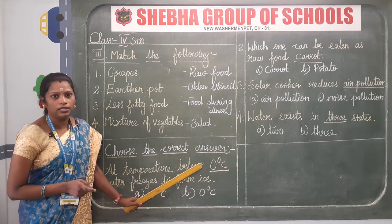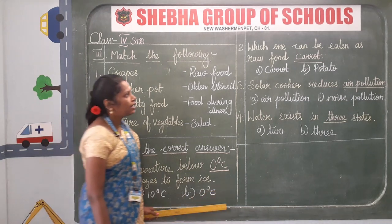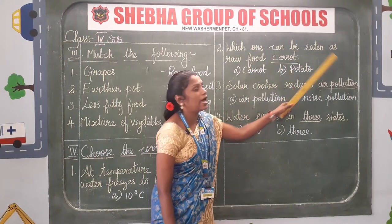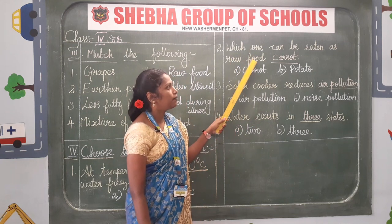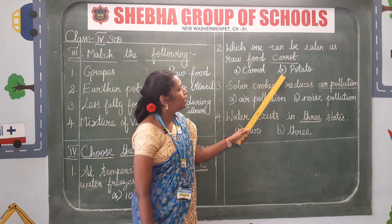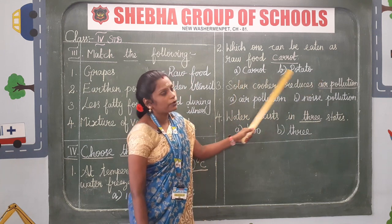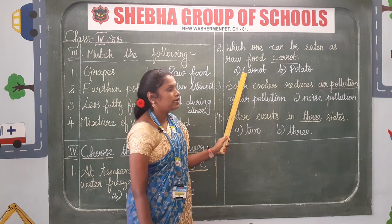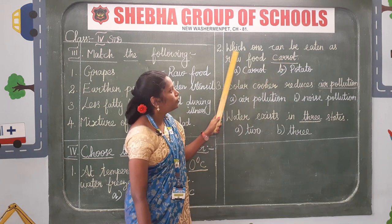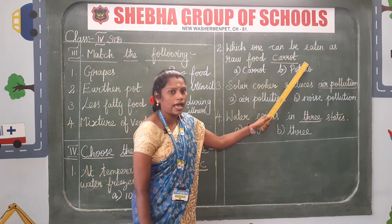Choose the correct answer. Next, number two: which one can be eaten as raw food? Option A is carrot, option B is potato. Carrot can be eaten raw, so the answer is carrot. Which one can be eaten as raw food? Answer is carrot.